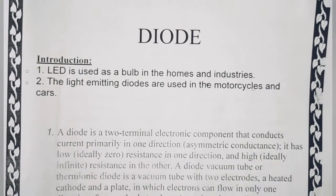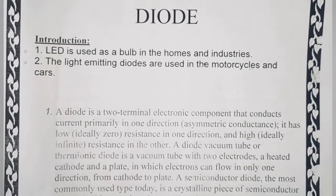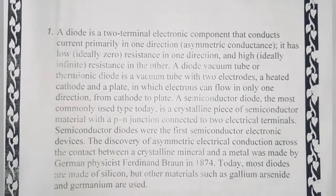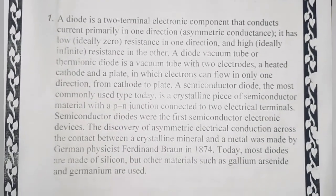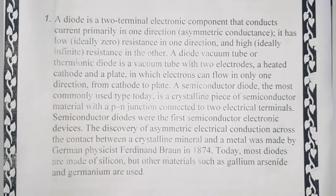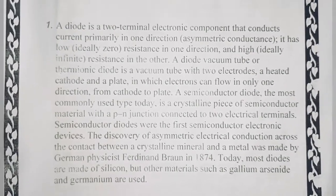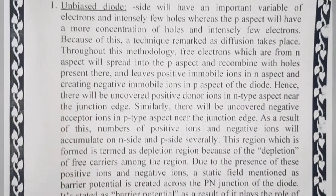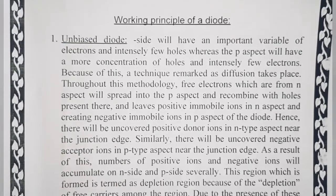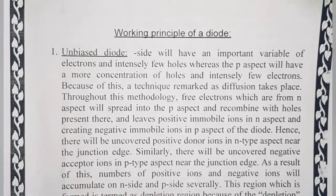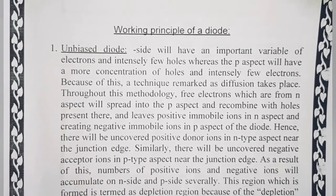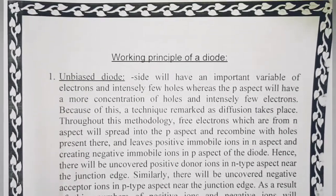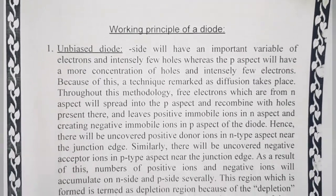यहाँ diode का introduction part है। Historical background को भी आप introduction के अंदर introduce कर सकते हैं। History — जो भी topic cover करते हैं, कहाँ से start होता है, कुछ बातें हैं — वह mention की जा सकती हैं। Next page के अंदर working principle of diode है।